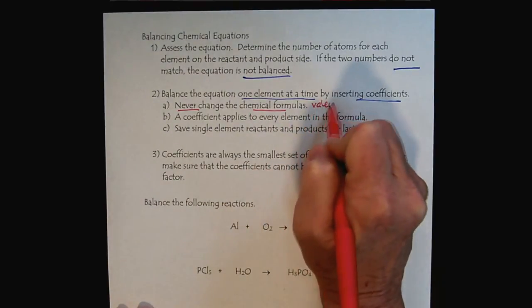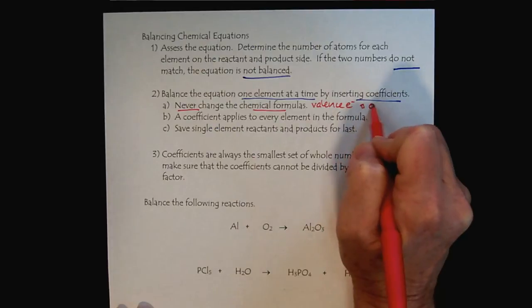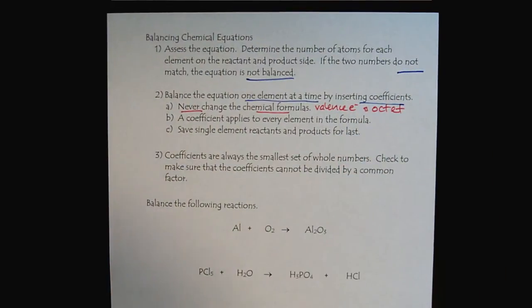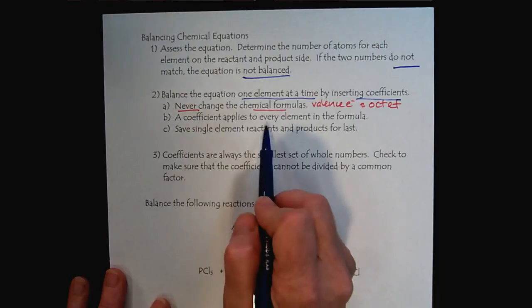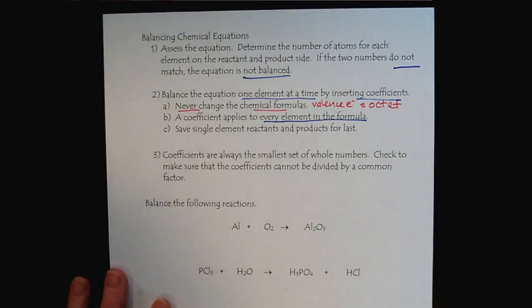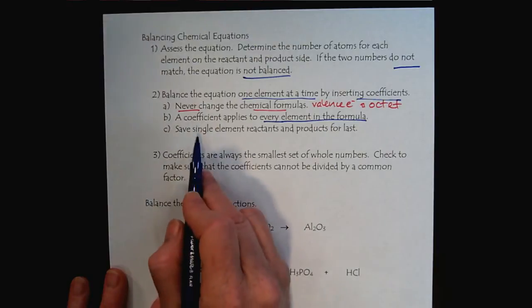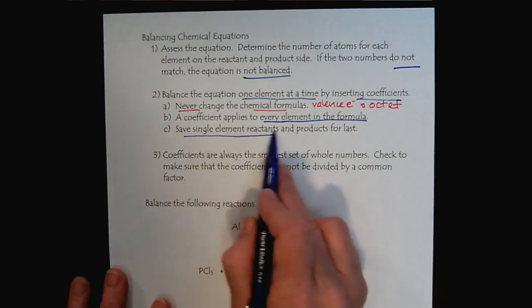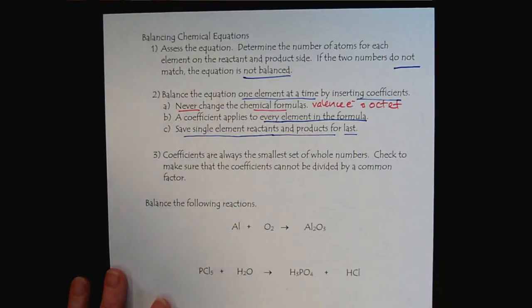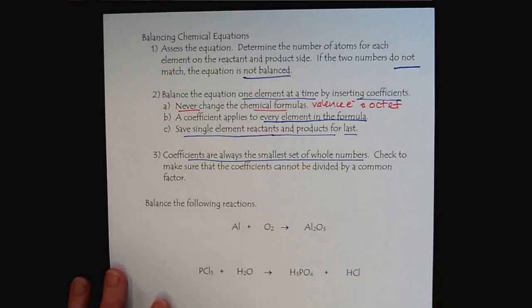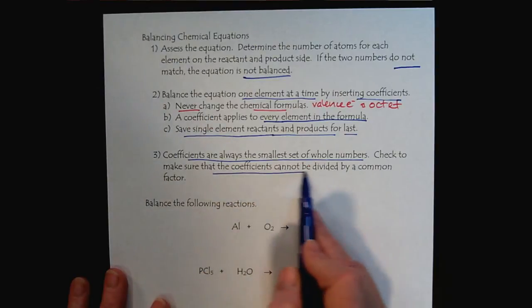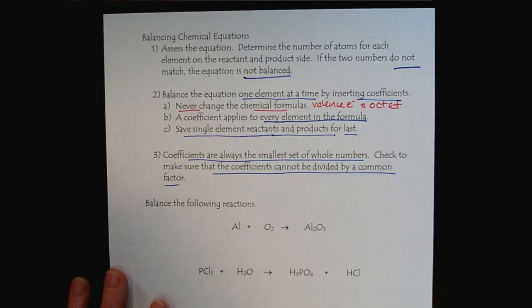A coefficient applies to every element in the formula. It's a good idea to save single element products and reactants for last, because you're only influencing one element at a time. The coefficients always need to be the smallest set of whole numbers. When you're all done, step back and look. Make sure your coefficients cannot be divided by a common factor.